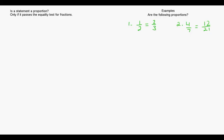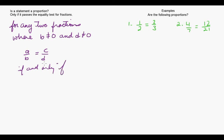Now that we have a definition of proportions in place, we're going to take a look at figuring out whether a statement is a proportion or not. A statement is a proportion only if it passes the equality test for fractions. The equality test for fractions is: for any two fractions where B cannot equal 0 and D cannot equal 0, we have the fraction A over B equals C over D if and only if A times D equals B times C.